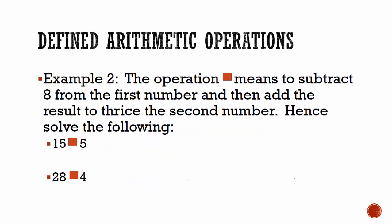In the second example, the operation rectangle means to subtract 8 from the first number and then add the result to thrice the second number. Hence, solve the following. Thrice means 3 times.